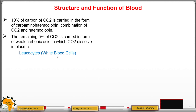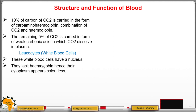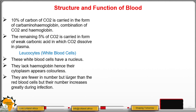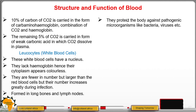White blood cells have a nucleus and lack hemoglobin in their cytoplasm, so they are colorless. They are fewer in number but larger in size than red blood cells. Their number increases greatly during infection. They are formed in long bones and lymph nodes, and protect the body against pathogenic microorganisms like bacteria and viruses.